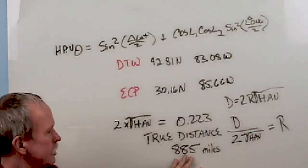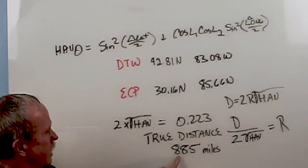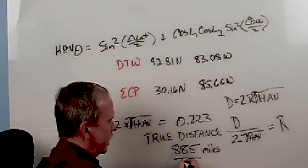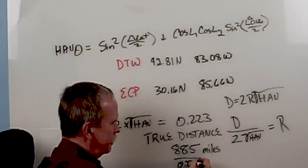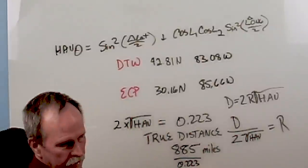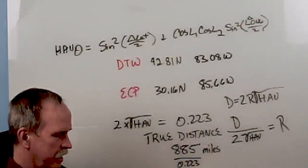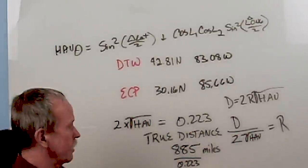Now, the true distance between those two points is measured at 885 miles. We divide that by 0.223, and we should come up with the radius of the Earth. Let's see how well it agrees with our other radiuses of the Earth.